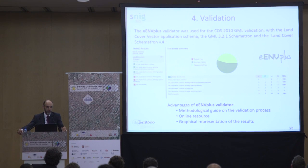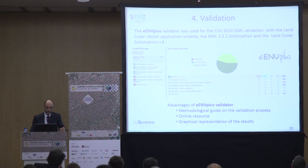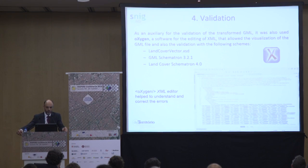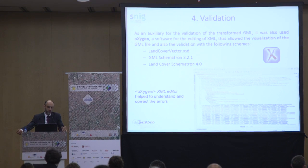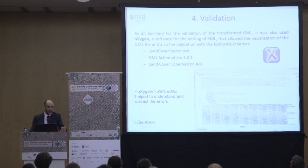An important aspect of the EANF+ validator is that it has a methodological guide for the validation process. It's an online, free-to-use resource, and results are presented graphically which allows a more easy-to-understand approach to the errors detected. We also used the Oxygen software for validation with the application schema, the GML Schematron, and the land cover Schematron. The goal was to test several approaches for validation to decide which to use in the future.